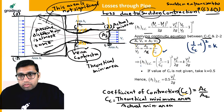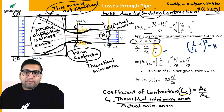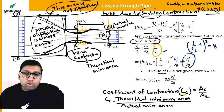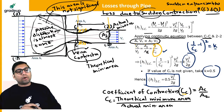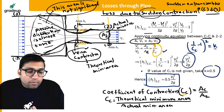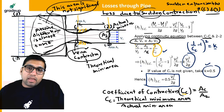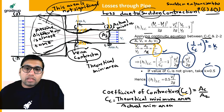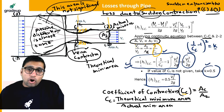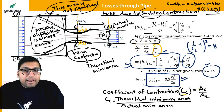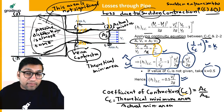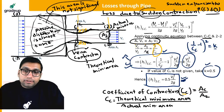Very important: if the value of coefficient of contraction cc is not given in the question, you have to take k = 0.5, and the direct formula becomes HF = 0.5·v2²/(2g). If coefficient of contraction is given, then use HF = (1/cc - 1)²·v2²/(2g). This is the formula for head loss due to sudden contraction — use the full formula if cc is given, and the simplified formula with k = 0.5 if it is not given.